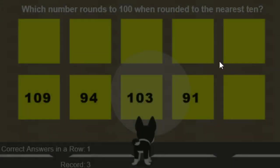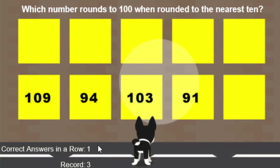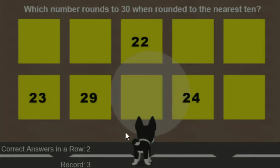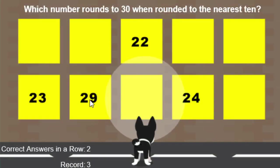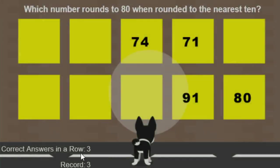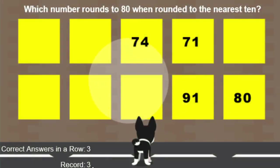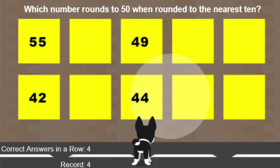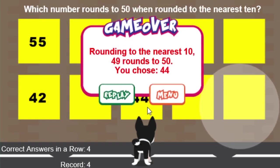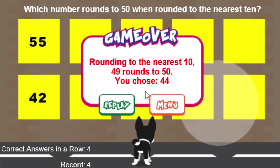You can see the correct answers in a row went back down to 0. I got one right — 2 — and now the correct answers in a row is 3 and the record is 3, and as I choose more correct answers that bumps up. To end the game, I just get one wrong and I'll go to the menu.